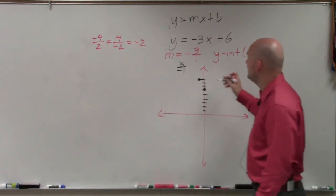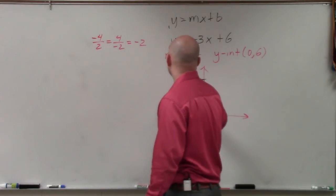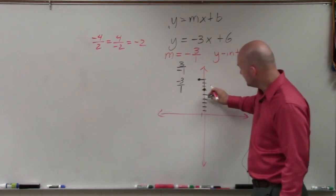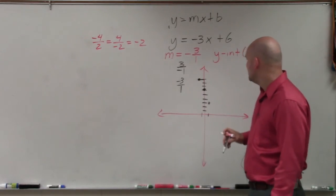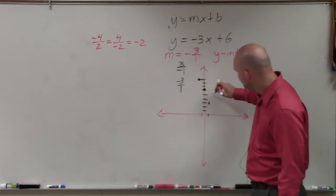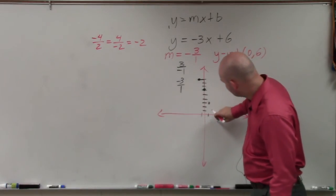You could also have this as a negative 3 over 1, which would tell you to go down 3 to the right one. And 1, 2, 3. My graph is not really that good.